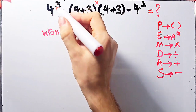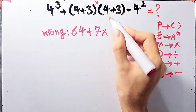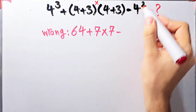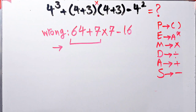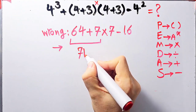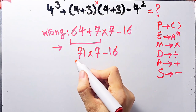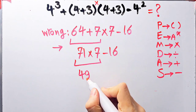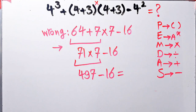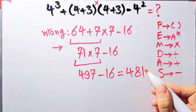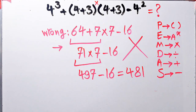Some people solve this question incorrectly: they say 4 to the power of 3 equals 64, then 64 plus 4 plus 3 which equals 7, then times 4 plus 3 which equals 7, then minus 4 to the power of 2 which equals 16. Starting from the left: 64 plus 7 equals 71, 71 times 7 equals 497, and 497 minus 16 equals 481. They say the final answer is 481, but this is definitely wrong.